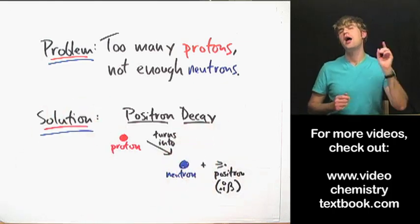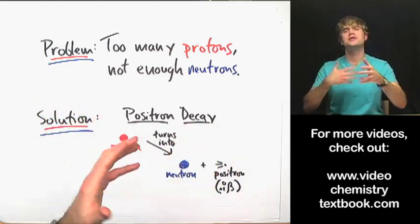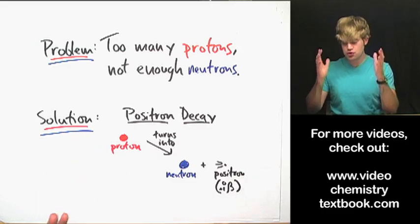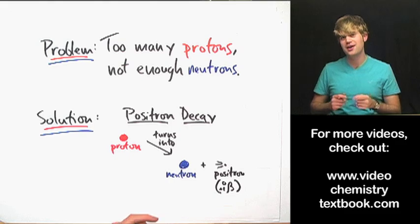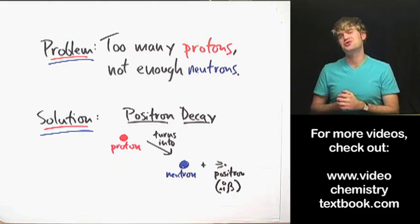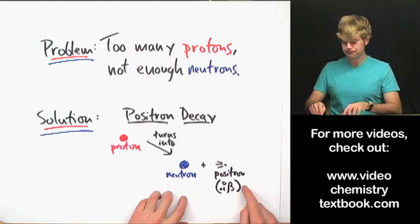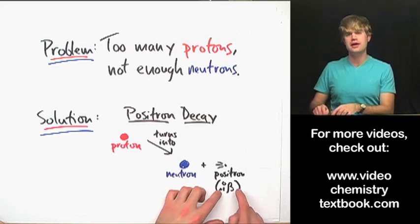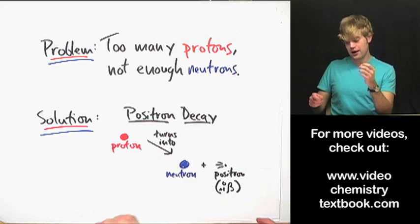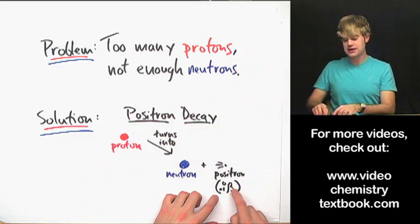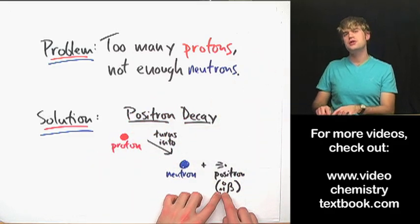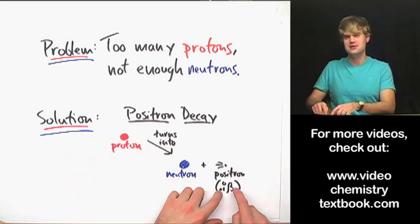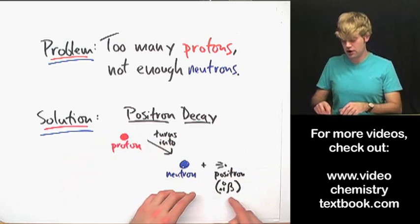So electrons and positrons — I hope to do a video on positrons and antimatter because it's really interesting. But for right now, all you need to know is that a positron is the opposite of an electron — it's positively charged. The symbol for a positron is very much like the symbol for an electron. We do the beta sign with a zero and a plus one. If we were doing a beta sign for an electron, it would be minus one.